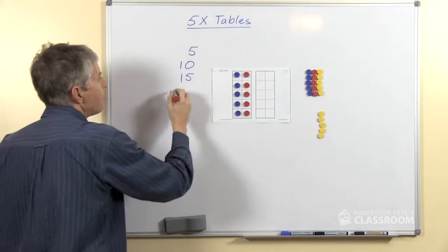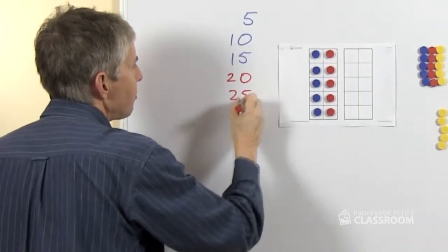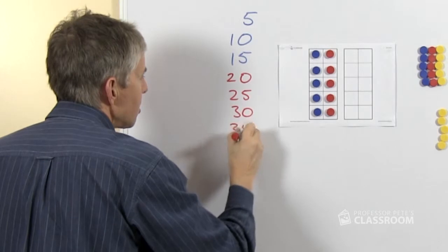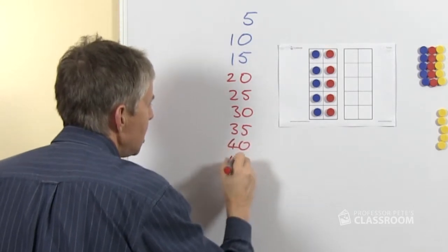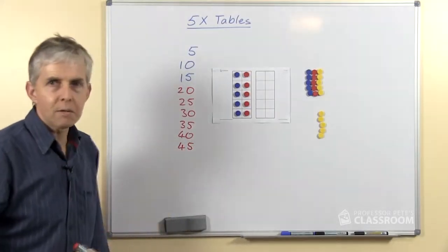We start with 5, 10, 15, then we have 20, 25, 30, 35, 40, 45.